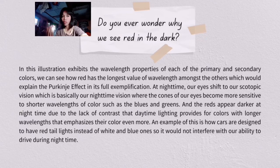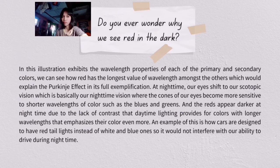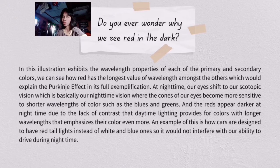The Purkinje effect, sometimes called the Purkinje shift or dark adaptation, is the tendency for the peak luminous sensitivity of the human eye to shift towards the blue end of the color spectrum at low illumination levels. The effect is named after the Czech anatomist Jan Evangelista, a pioneer Czech experimental physiologist whose investigations in the fields of histology, embryology, and pharmacology helped create a modern understanding of eye vision, brain and heart function, mammalian reproduction, and composition of cells.